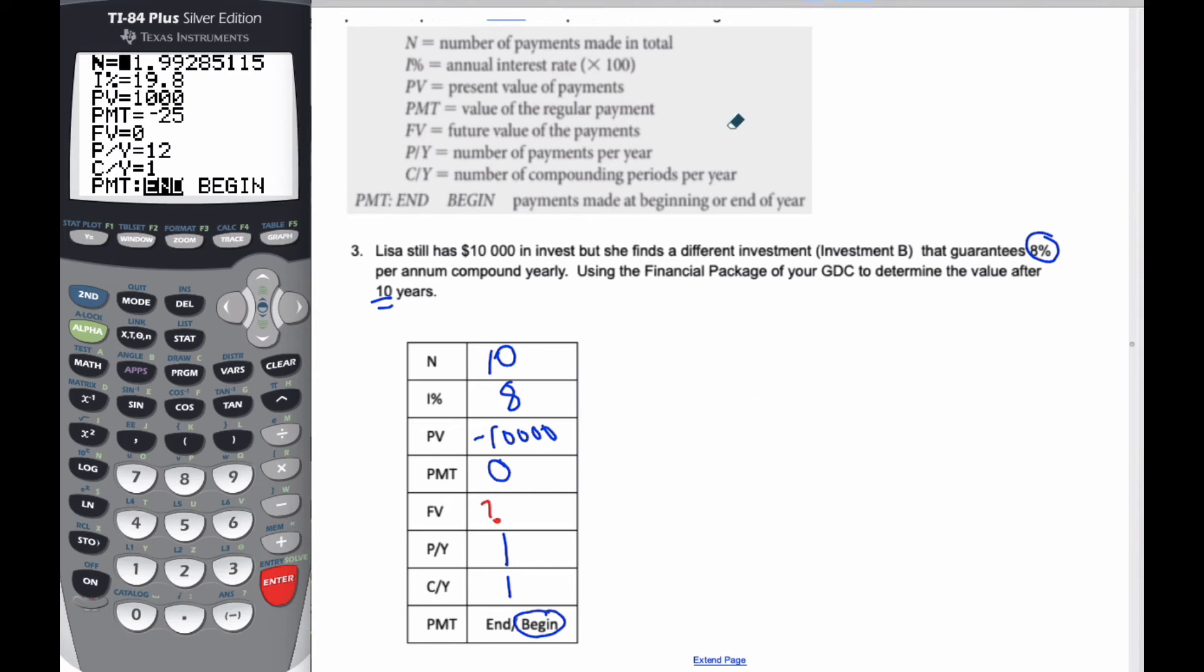And I just realized that is 10,000. There we go. So now I'm going to put these values into my calculator. As we said, so 10, 8, negative 10,000. And then this is zero. I'm going to come back to that one. That's one. And that's one. And I need to make it at the beginning. So I hit enter on that.